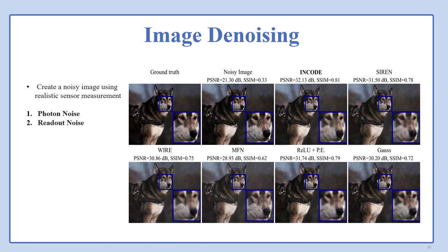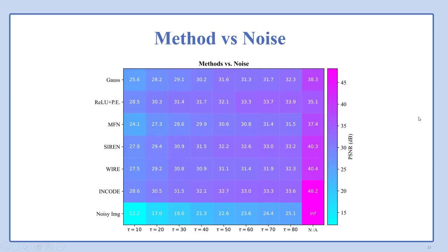ENCODE also demonstrates its effectiveness in image denoising, significantly improving image fidelity. We create noisy images using realistic sensor measurements, incorporating readout and photon noise through independent Poisson random variables on each pixel. ENCODE adaptively preserves image details while reducing noise artifacts. These are different methods versus noise values.